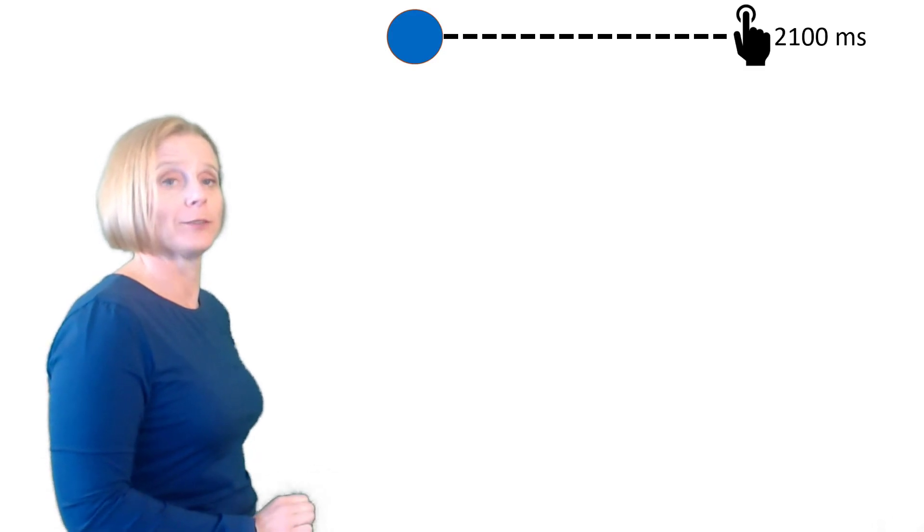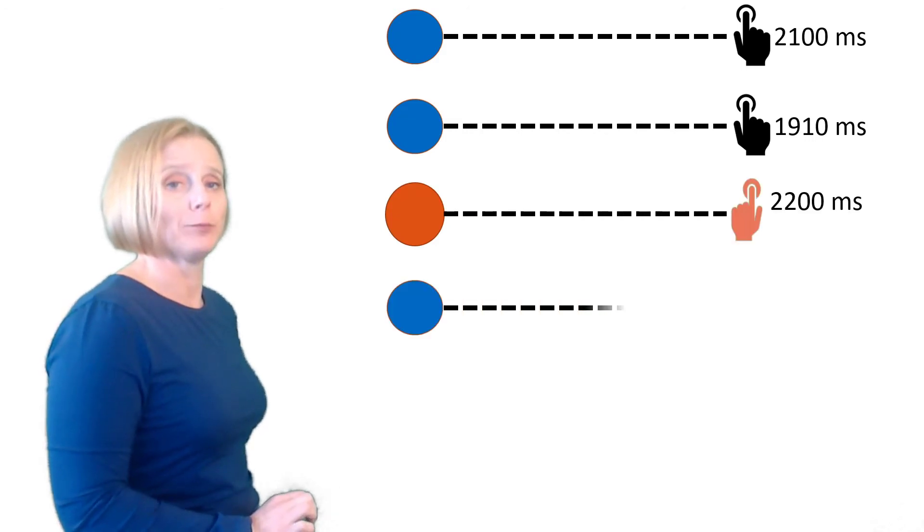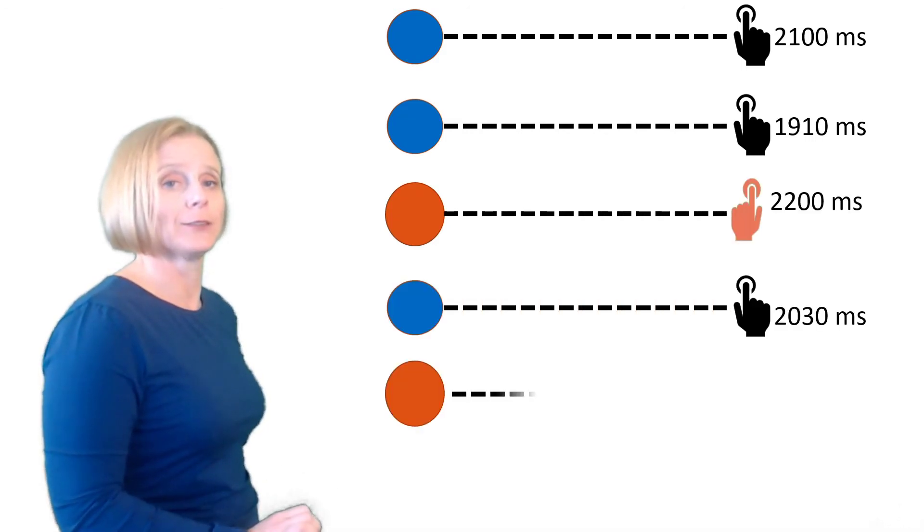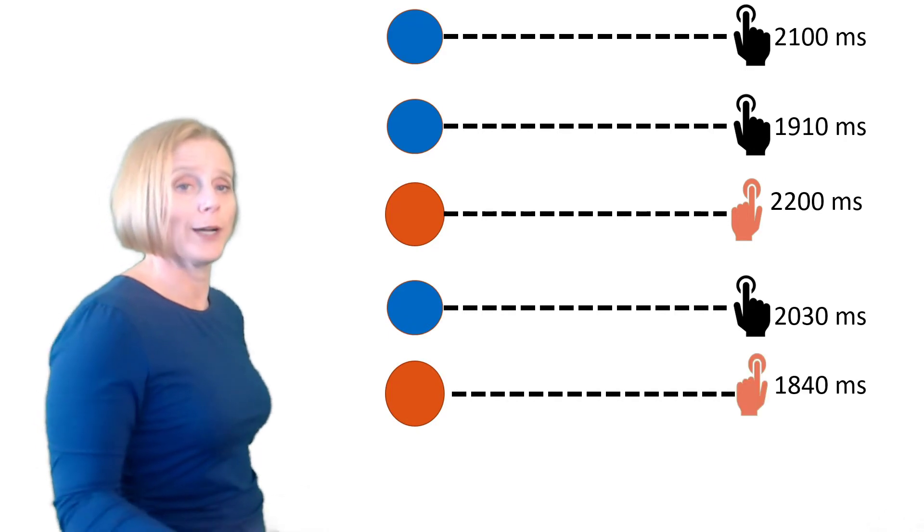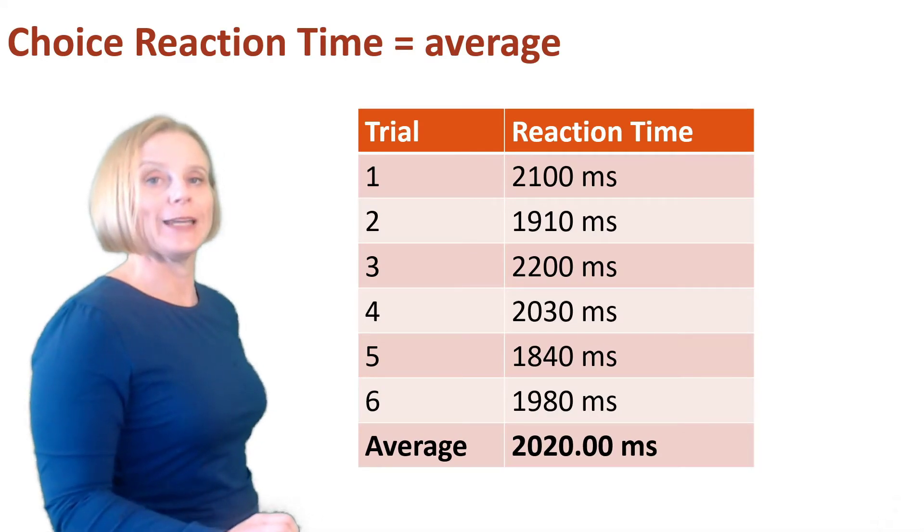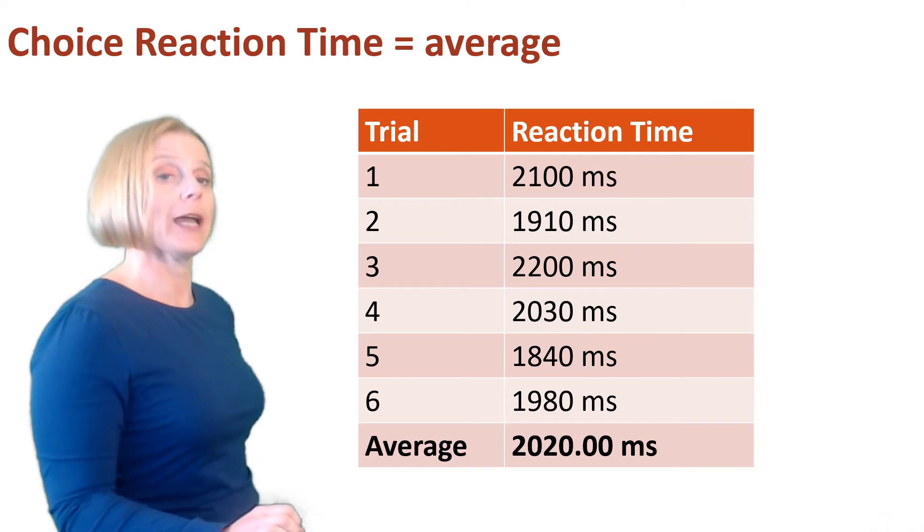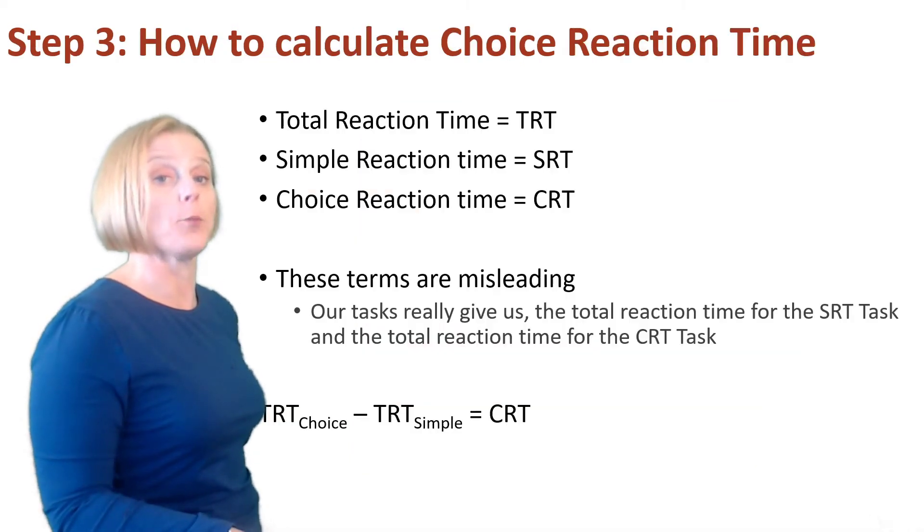After responding to multiple trials alternating between blue left and red right, we create an average of the choice reaction time, and here the average is 2,020 milliseconds.